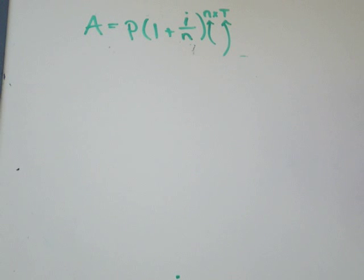So I've written the formula a equals p in brackets 1 plus i over n to the exponent of n times t. This might look a little bit different than the formula that you've seen. I just write the formula this way because this is what makes sense to me. So let's go through and I'll tell you what all the variables stand for.